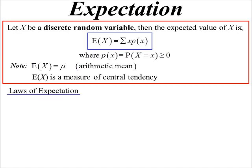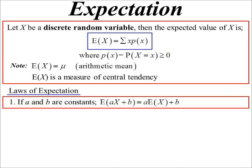So some laws of expectation. We're assuming a and b are just constants. If we want to find the expected value and we play around with the function of it and we have aX + b, then it's the same as a times the expected value of X plus b.